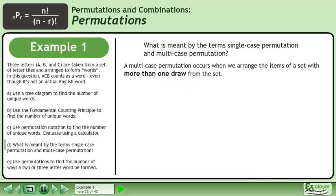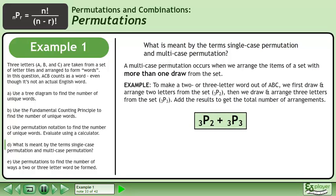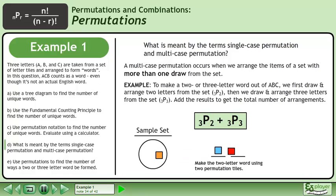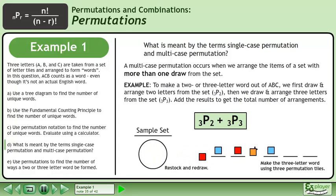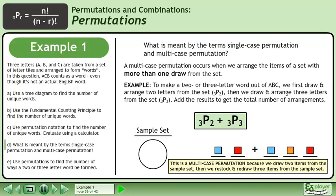A multi case permutation occurs when we arrange the items of a set with more than one draw from the set. For example, to make a two or three letter word out of ABC, we first draw and arrange two letters from the set, represented by 3P2, then add the results to get the total number of arrangements: 3P2 plus 3P3. We make the two letter word using two permutation tiles, then restock and redraw to make the three letter word using three permutation tiles.